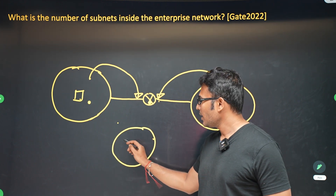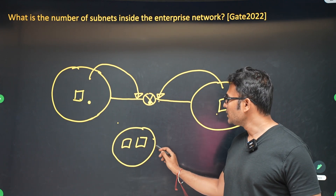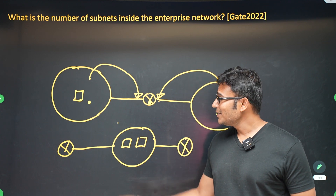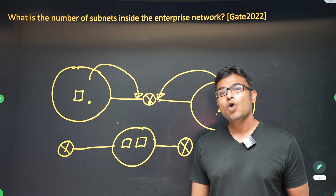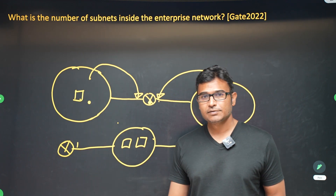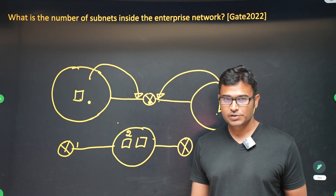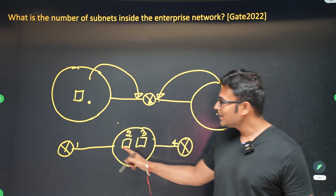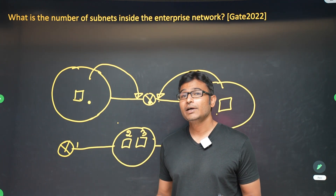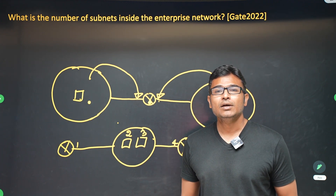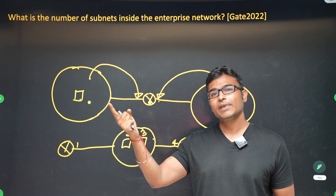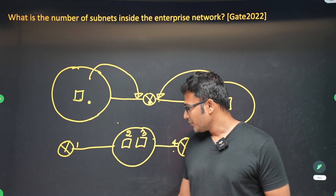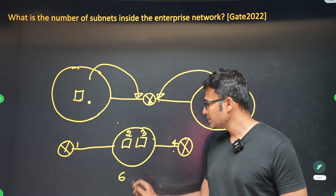Let's say there are two networks, each with two hosts, connected via a router. How many IP addresses are required? One IP address is needed for the router interface in the first network, one for each host, and one more for the router interface in the second network — so four IP addresses total. But if you buy a block of four, two addresses are wasted for the network ID and directed broadcast address, so you actually need to buy at least six.